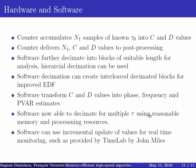Now if you take a look on the hardware and software side, because it's interesting to see how it actually affects things. Now, the counter accumulates N1 samples that you decide with a known tau 0 into C and D values. Now, the counter delivers these values to the post-processing, so you can decide what's a suitable rate. If you wanted one second or every 10 seconds or 10 times a second, that's up to you. But you set the values and you produce it.